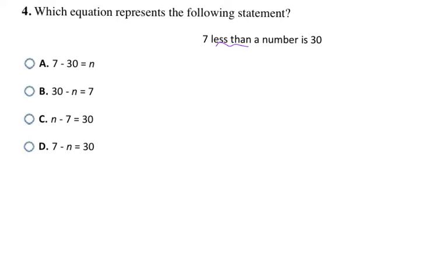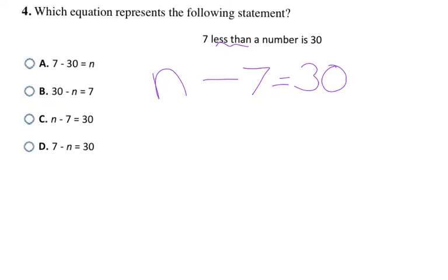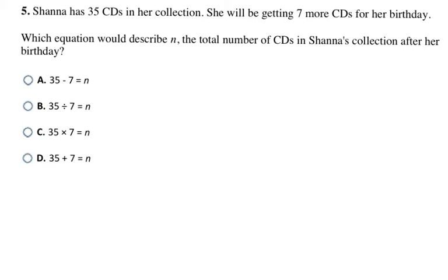This statement says '7 less than a number is 30.' 'Less than' is one of those flips I have to watch out for — it means subtraction, but instead of the 7 being at the beginning of the expression, it's going to be at the end. So n comes before the subtraction symbol: n − 7 = 30. That's going to make C my final answer.